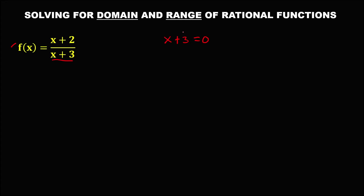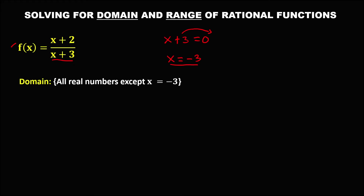Then to solve for x, transpose this positive 3 to the other side. So x equals negative 3. Therefore, the domain is all real numbers except x equals negative 3, or x is an element of real numbers such that x is not equal to negative 3. Then to find the range,